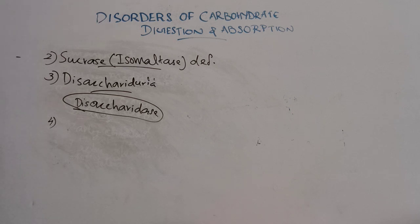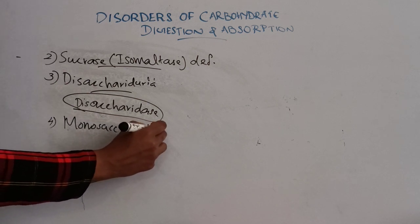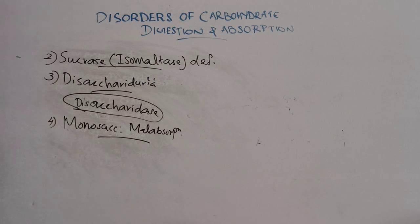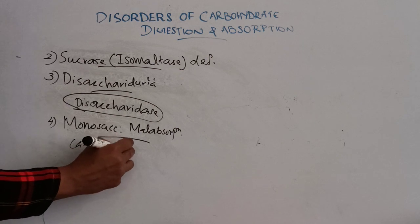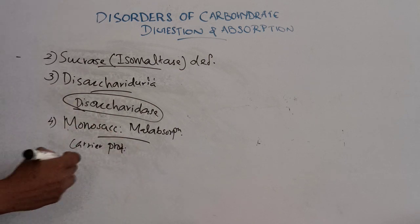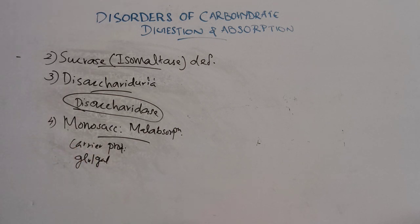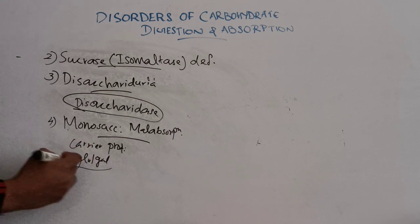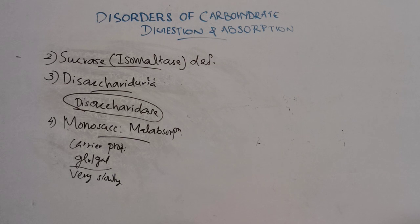The fourth one is monosaccharide malabsorption. This is due to the absence or deficiency of carrier protein necessary for the absorption of glucose or galactose. As a result, glucose or galactose are absorbed very slowly. So this is about disorders of carbohydrate digestion and absorption. Thank you for watching.